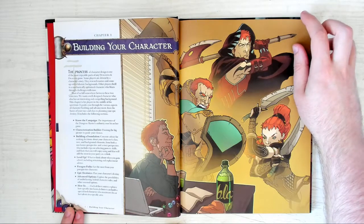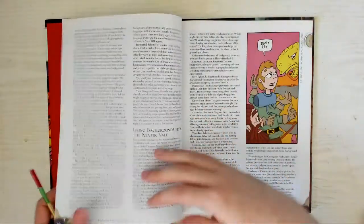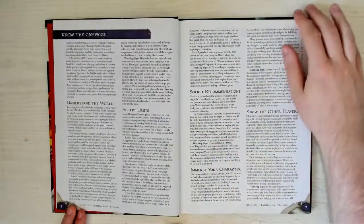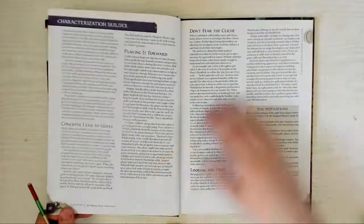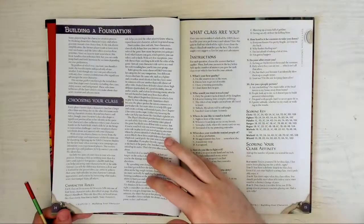The start of the book goes over all the classes, races and backgrounds in 4th edition. Wait, 4th edition had backgrounds? Huh, who knew? Moving on. There's a very thorough section on what the different types of powers are for, and also the roles people play in the party.